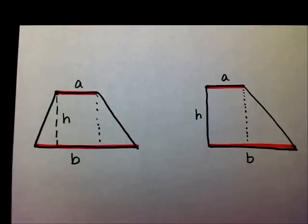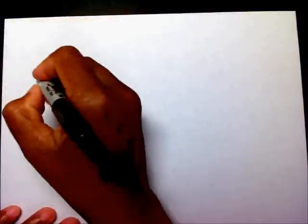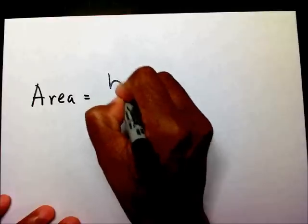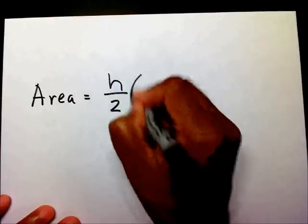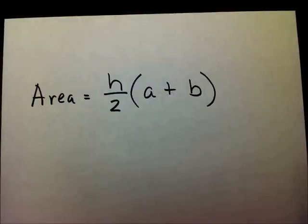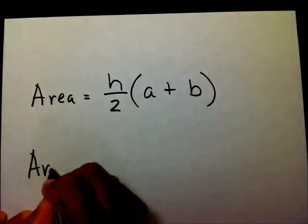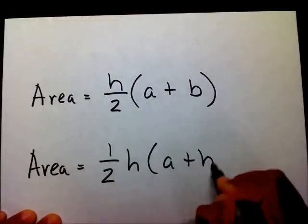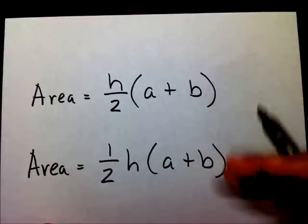So, if we wanted to find the area of a trapezoid, we have a formula that we need to use. And that formula is, area equals h divided by 2 times a plus b. Some people write it as area equals one-half the height times a plus b.